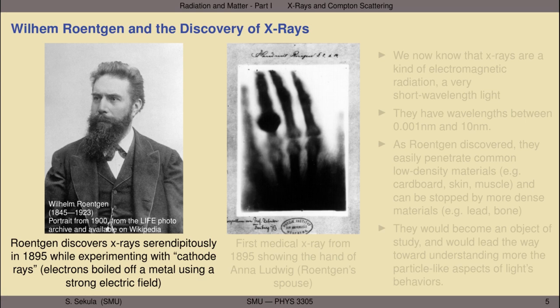X-rays were discovered serendipitously in 1895 while Wilhelm Röntgen was experimenting with what were then known as cathode rays, which we would now simply know as electrons. He was using a device that would boil electrons off a metal using a very strong electric field. He observed, some distance away from the apparatus, that a special phosphorescent screen was glowing even though there should be no radiation from the experiment actually reaching the screen. He became obsessed with trying to understand this phenomenon and after careful experimentation, decided that he had isolated a new kind of radiation that was heretofore unknown.